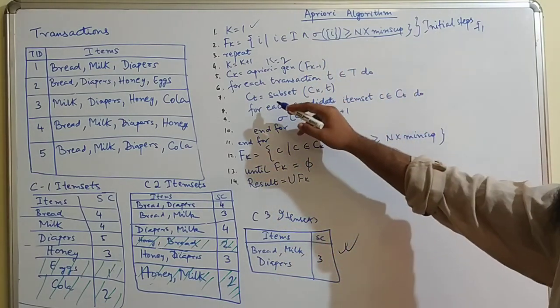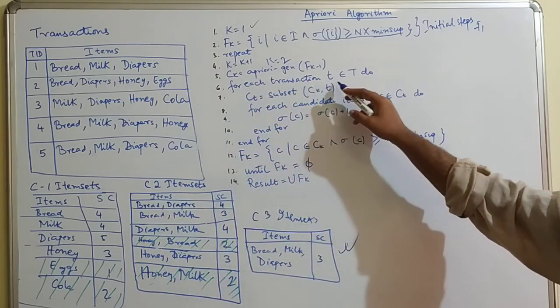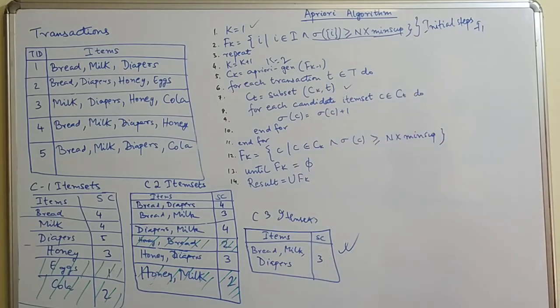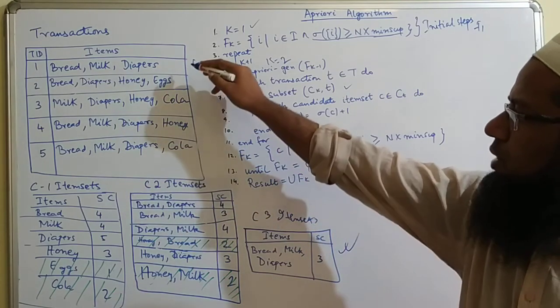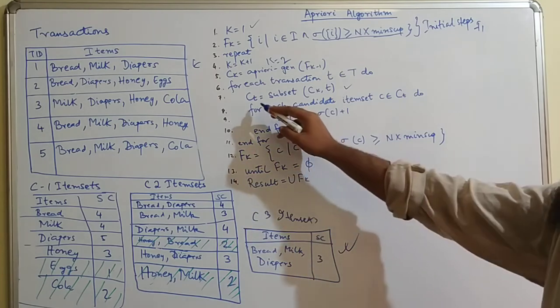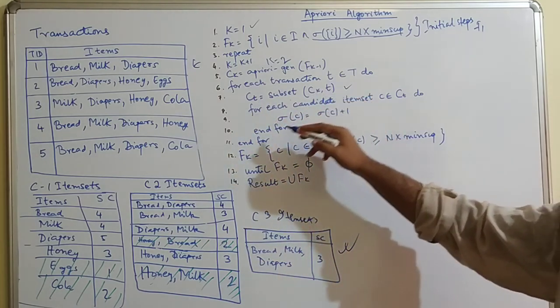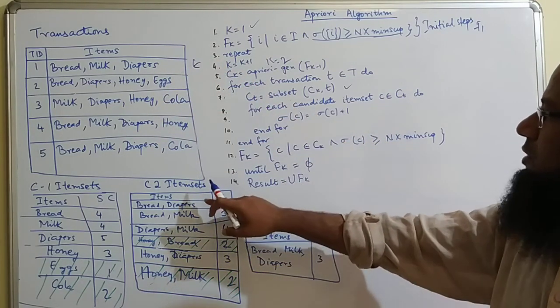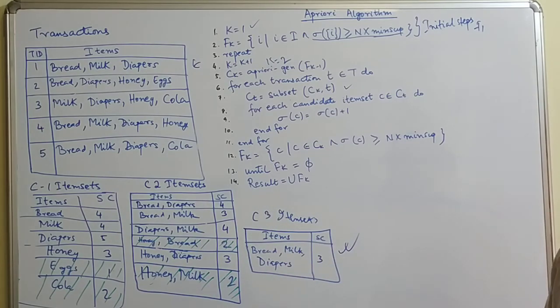Then, once we get this, for each transaction t belongs to capital T, do the following things. When your transactions are belonging to 1, 2, 3, 4, 5, c of t equals subset of c of k comma t. That means you are going to check each transaction and form the candidate 2 item set.